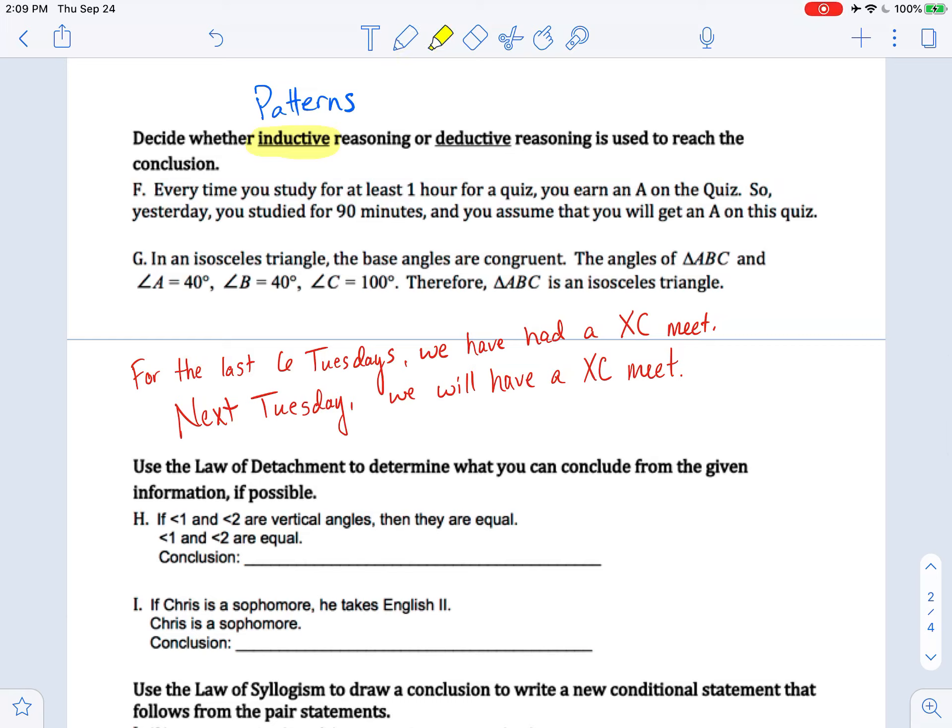So every time you study for at least one hour for a quiz, you earn an A on the quiz. So yesterday you studied for 90 minutes and you assume that you will get an A on this quiz. Well, I don't see any vocab words. I don't see any definitions, no facts, nothing like that. I'm not using the law of syllogism. I'm not using the law of detachment. So this is going to be inductive.